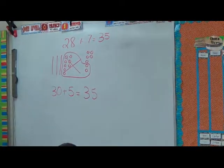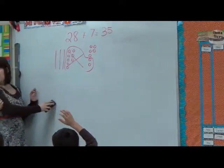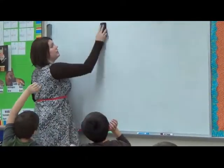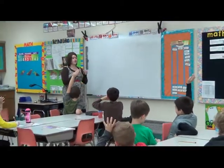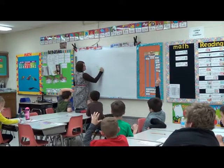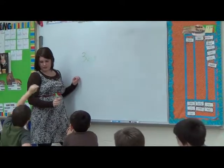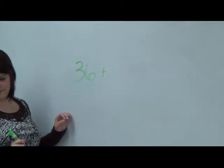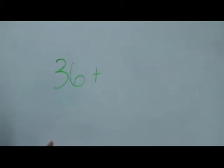All right, who thinks they can come up and show this on the board and explain what it is that they are doing? Let's do 36 plus what number? You need a single digit number. Okay, give me a single digit number — bigger than 5, smaller than 10. Seven. Okay.